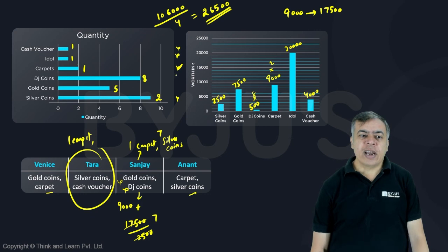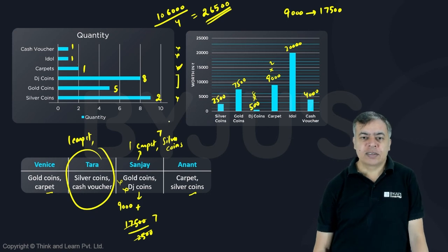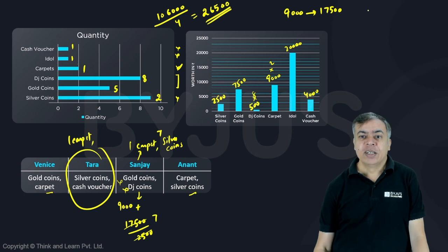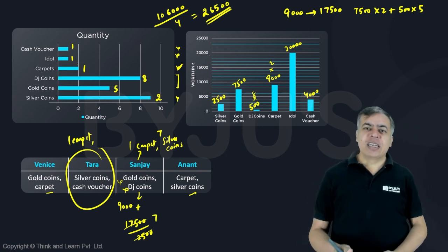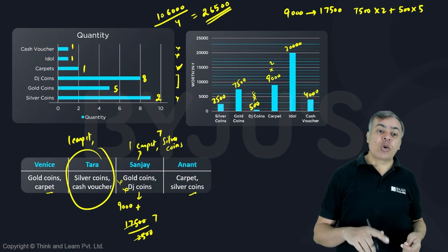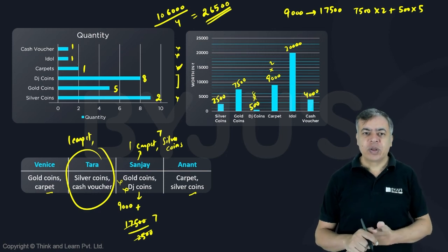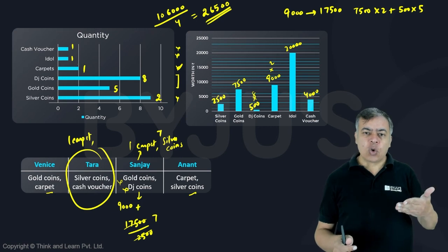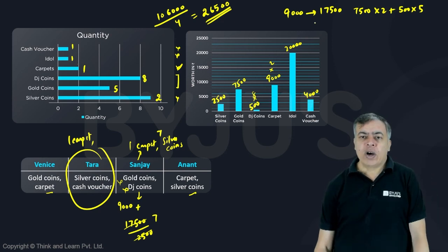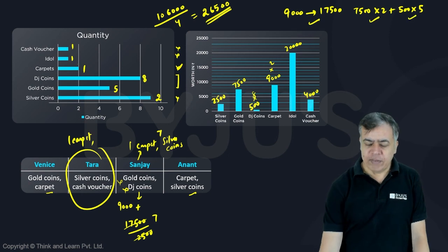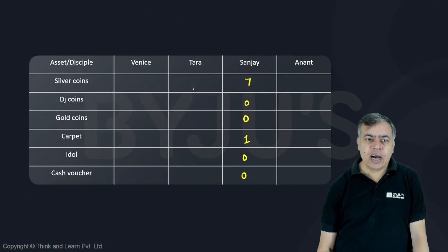Tara can have DJ coins and gold coins. The only possibility: 2 gold coins at 7,500 each = 15,000, plus 5 DJ coins at 500 each = 2,500; total = 17,500. One gold coin equal to 15 DJ coins is not possible since only 8 DJ coins exist. So Tara gets 1 carpet, 2 gold coins, and 5 DJ coins.